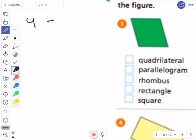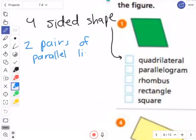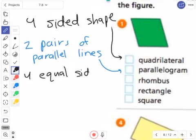So quadrilateral means four-sided shape. So that is a quadrilateral. A parallelogram, two pairs of parallel lines, lines that never touch. That's a parallelogram. A rhombus has four equal sides and opposite angles equal.